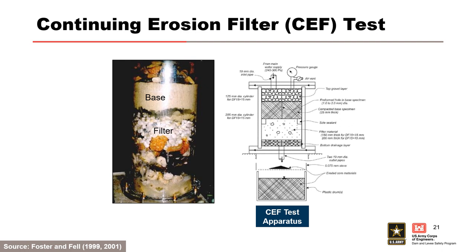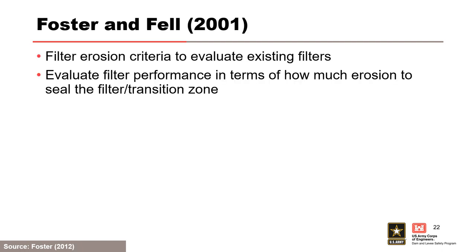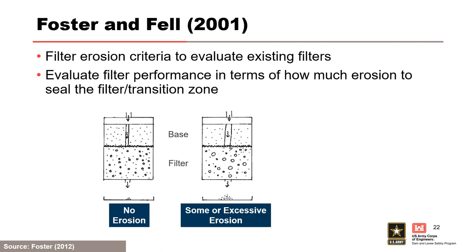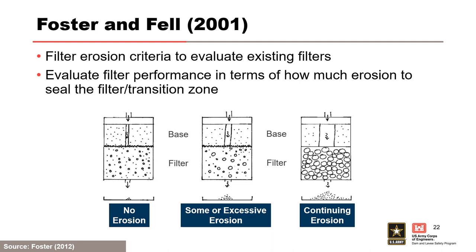This process was repeated with progressively coarser filters until the filter was not sealed. Based on observed eroded materials from the continuing erosion filter tests, erosion conditions were established depending on the ratio of particle and pore sizes. Thus, erosion will either not continue (no erosion), stop after only minor erosion (some erosion), stop only after a significant amount of erosion (excessive erosion), or erosion will continue (continuing erosion). These erosion conditions were derived from continuing erosion filter tests using very high water pressures and a preformed hole, so the results are likely conservative.